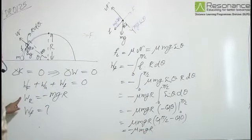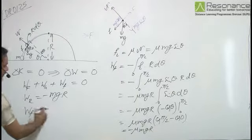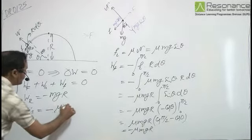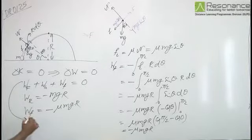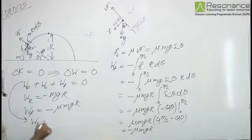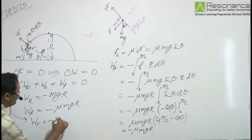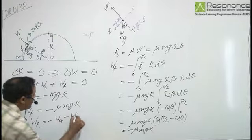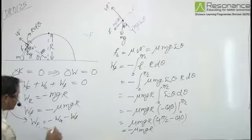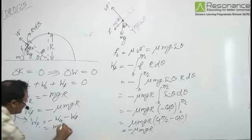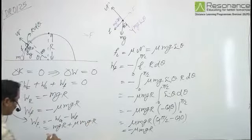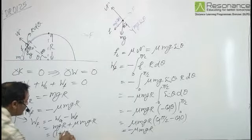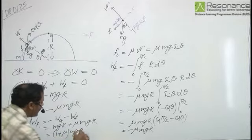So here work done by gravity is minus MgR and work done by frictional force is minus mu MgR. So we can write work done by the person is equal to minus work done by gravity and minus work done by friction, that is equal to MgR plus mu MgR, or that is equal to (1 plus mu) into MgR.